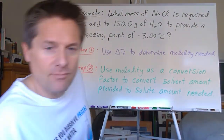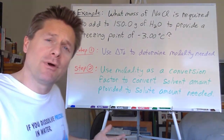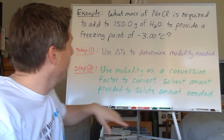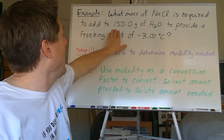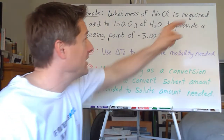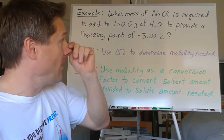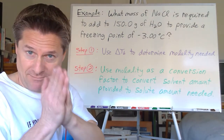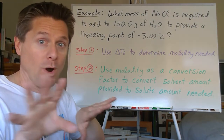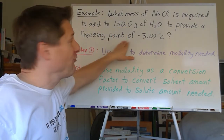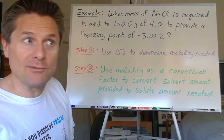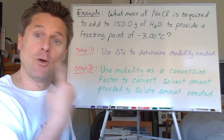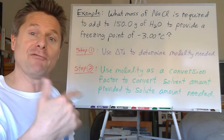Here's a problem you may run into on a quiz or exam. What mass of sodium chloride is required to add to 150.0 grams of water to provide a freezing point of negative 3.00°C? We know our solvent is water, our solute is NaCl, and we're assuming an ideal solution. We don't want our roads freezing at 0°C — we want the freezing point depressed below that.